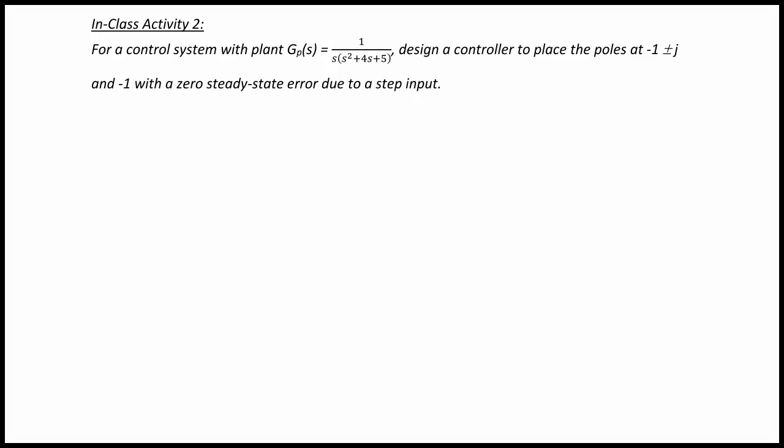In Class Activity 2. For a control system with plant GP(s) equal to 1 over s times (s squared plus 4s plus 5), design a controller to place the poles at negative 1 plus or minus j and negative 1, with zero steady state error due to a step input.